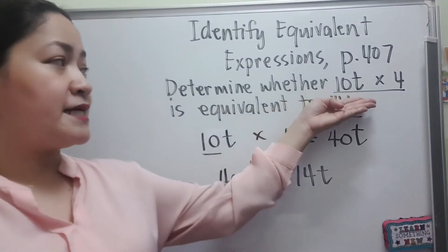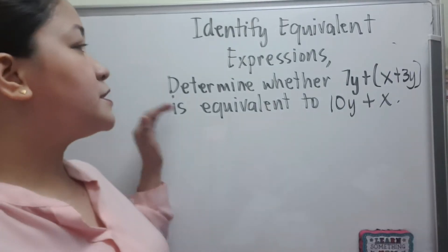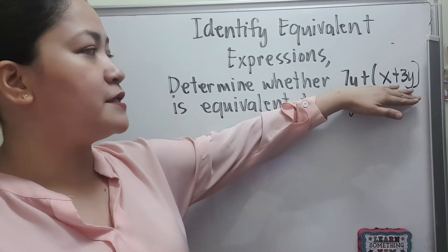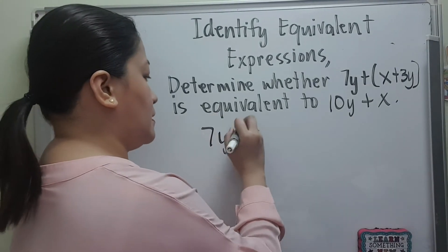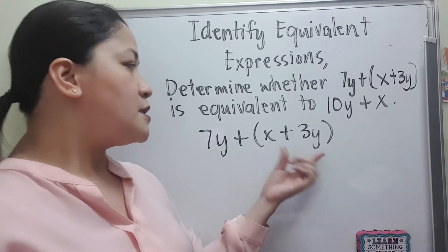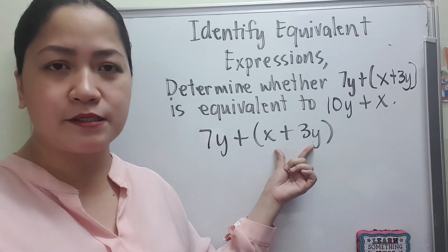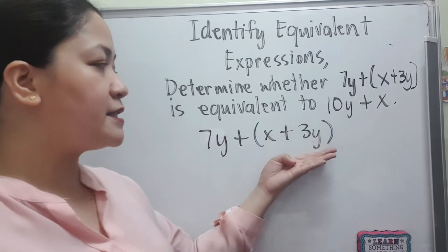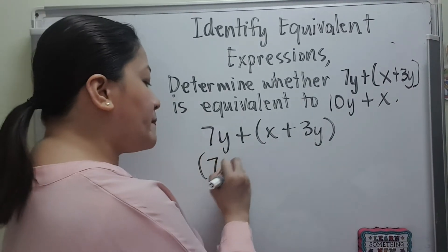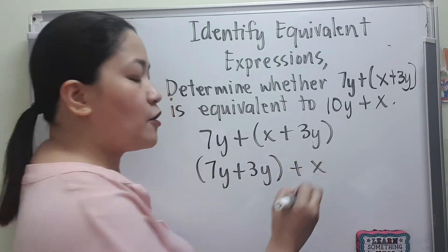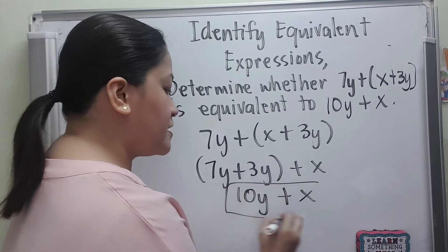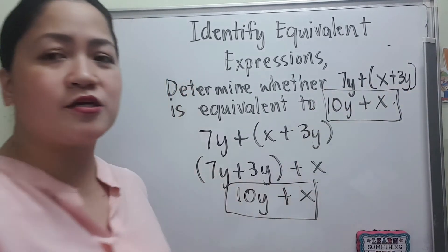Now determine whether 7y plus the quantity of x plus 3y is equivalent to 10y plus x. Using the order of operations, the terms inside the parentheses, x and 3y, are unlike terms so we cannot combine them. However, 3y inside the parentheses is like the term 7y outside. So we can combine 7y and 3y to get 10y, but we cannot combine them with x. That gives us 10y plus x, which matches the other expression — they are equivalent.